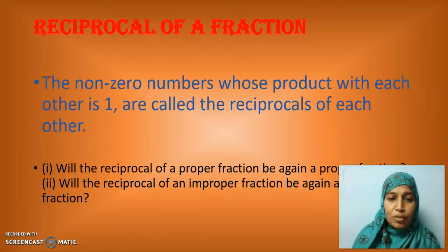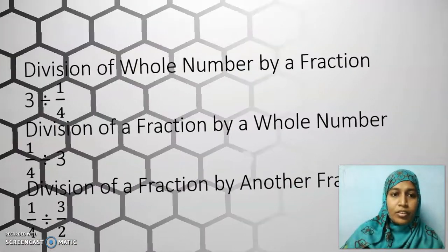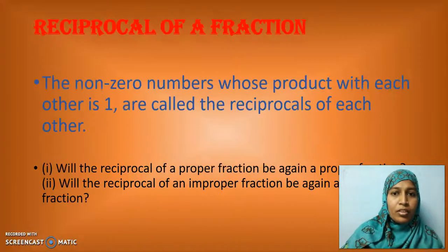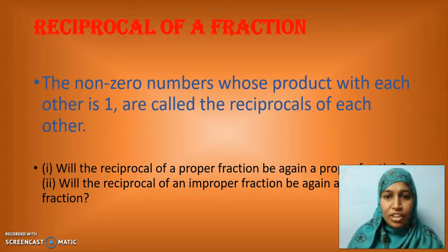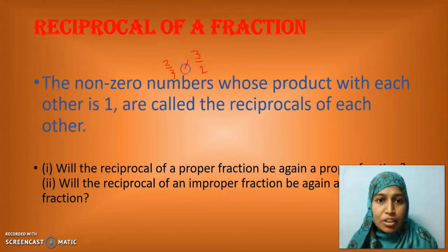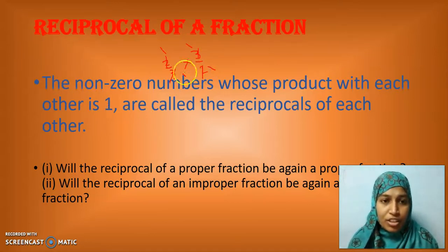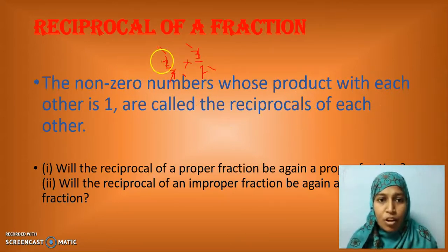How is reciprocal defined? The definition states that two non-zero numbers whose product with each other is 1 are called reciprocals of each other. If I consider 2 by 3 as my fraction, its reciprocal is 3 by 2. If I multiply these two, I will get 1 — since the numerators and denominators cancel. Reciprocal of 2 by 3 is 3 by 2, and reciprocal of 3 by 2 is 2 by 3. It works either way.